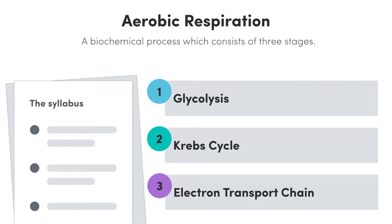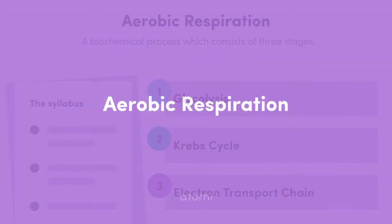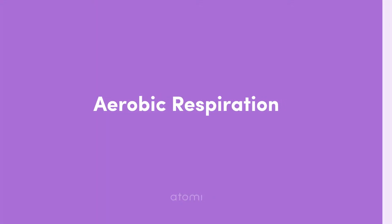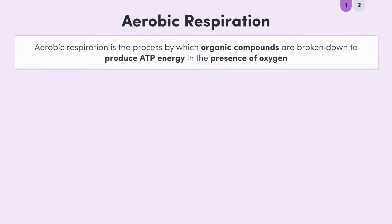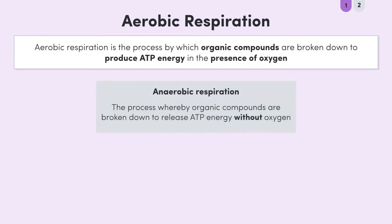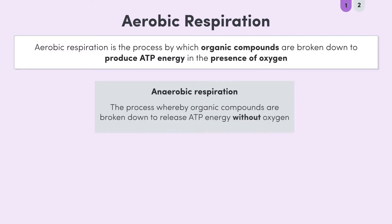Alright, first up, a quick recap. Aerobic respiration is the process by which organic compounds are broken down to produce ATP energy in the presence of oxygen. You might remember anaerobic respiration, which is where organic compounds are broken down to release ATP energy without oxygen, but we'll look at this another time.